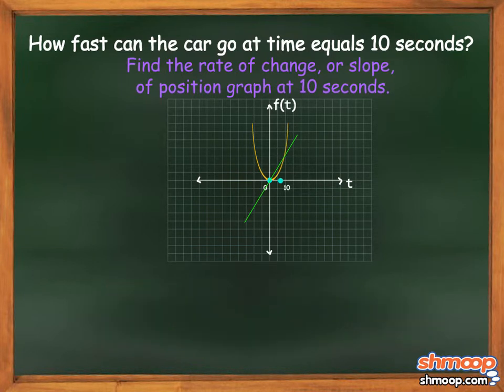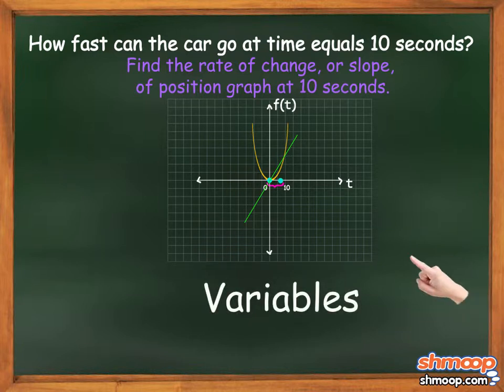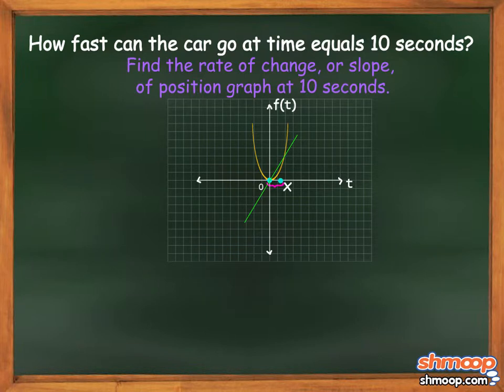Another way of thinking about this is the distance between the two points, which we can call the variable h, approaching zero. Since we want to express everything in terms of variables, we can label the initial point with the variable x, which we'll later substitute 10 for.